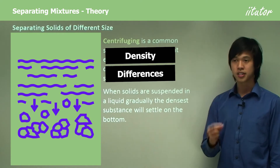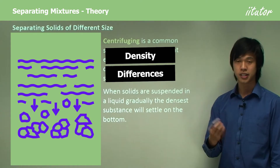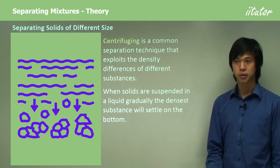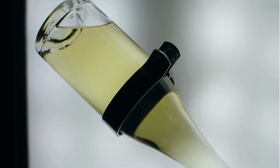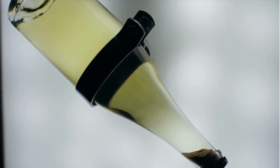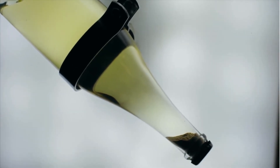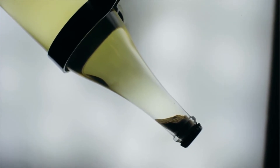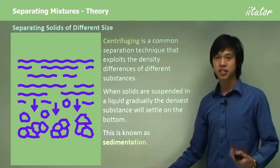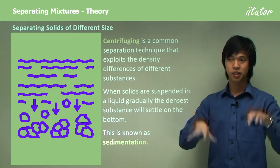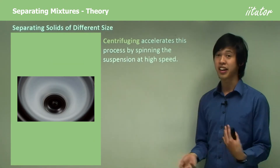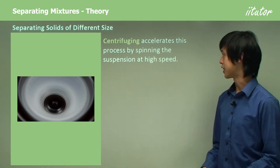When you have a solid suspended in a liquid — sort of like how blood cells are suspended in blood — gradually the densest substance will settle on the bottom. If you shake up a container with sand all through it, eventually all of the sand will drop to the bottom and settle. We call this sedimentation. Centrifuging is simply an accelerated version of sedimentation.